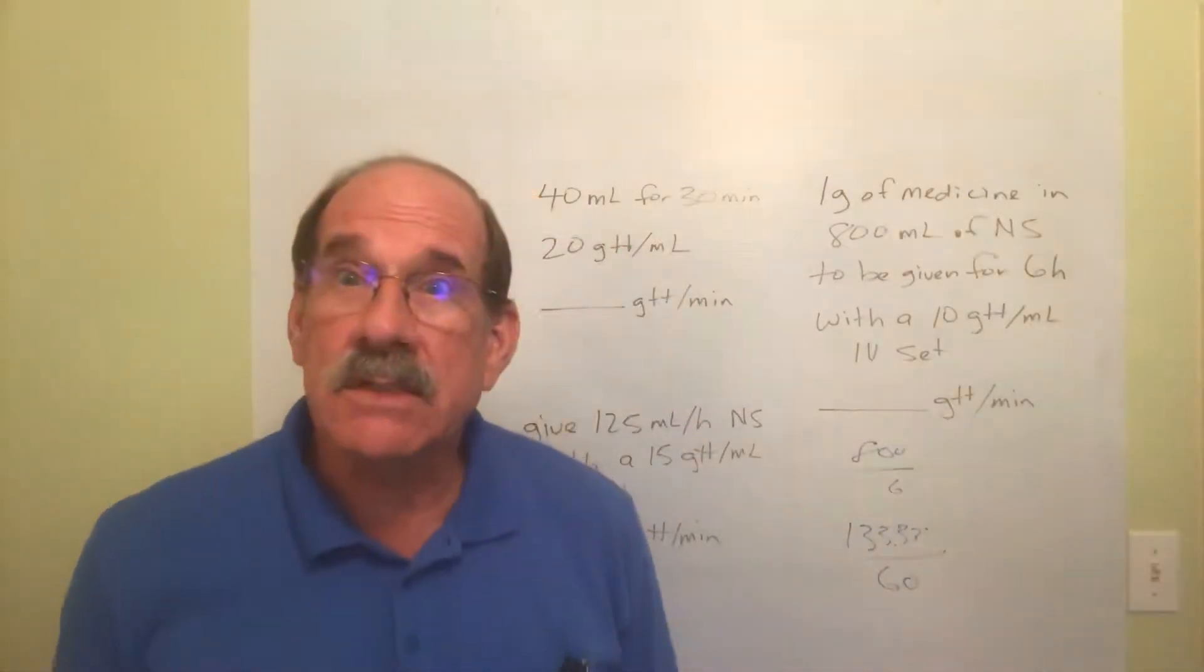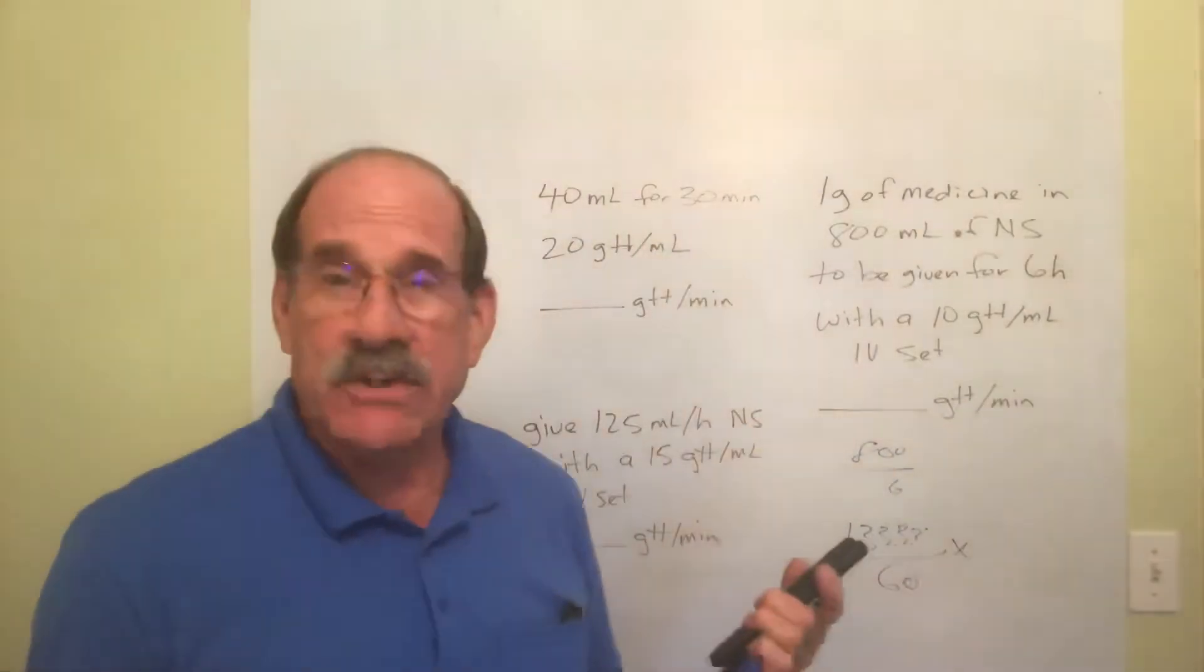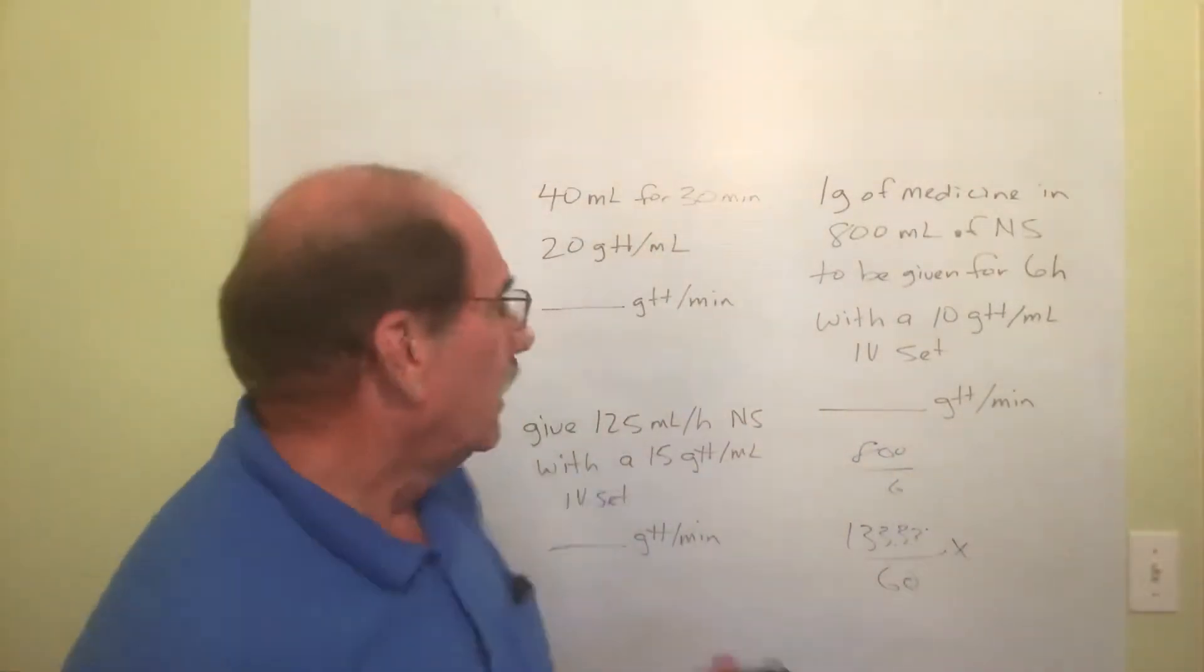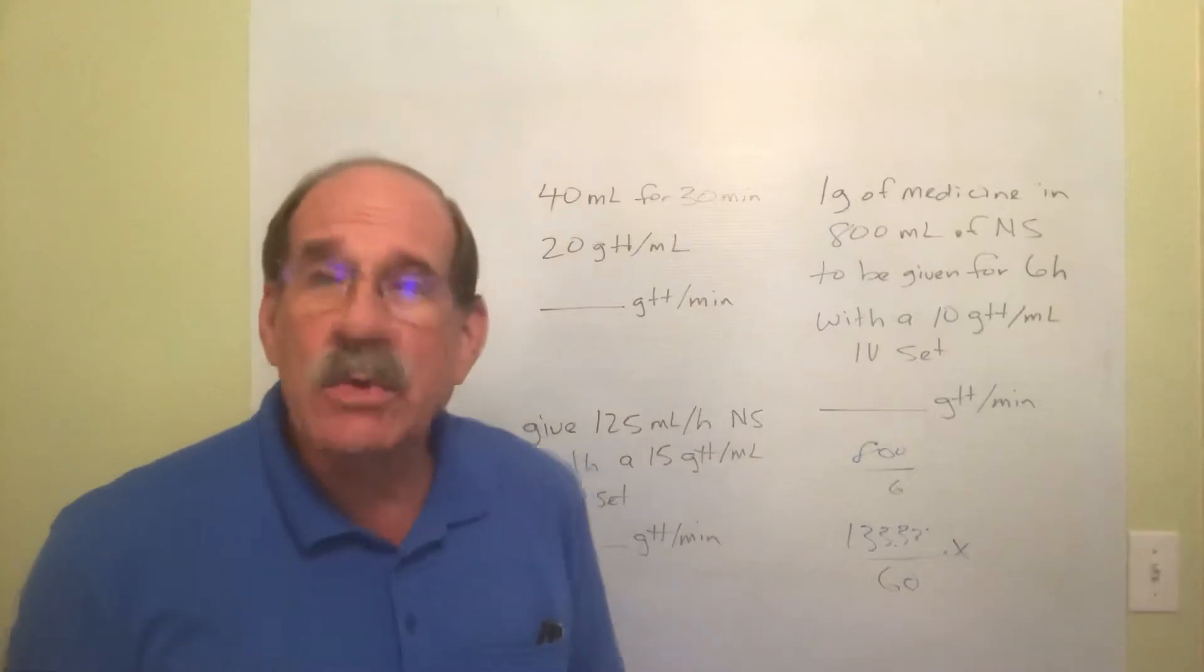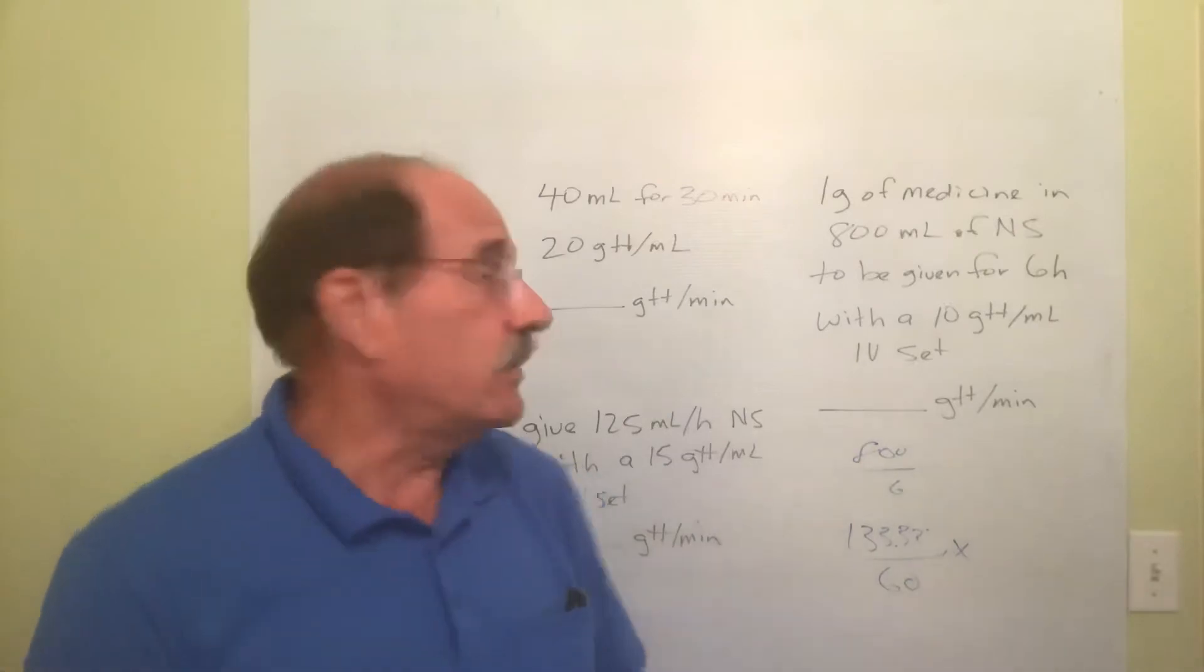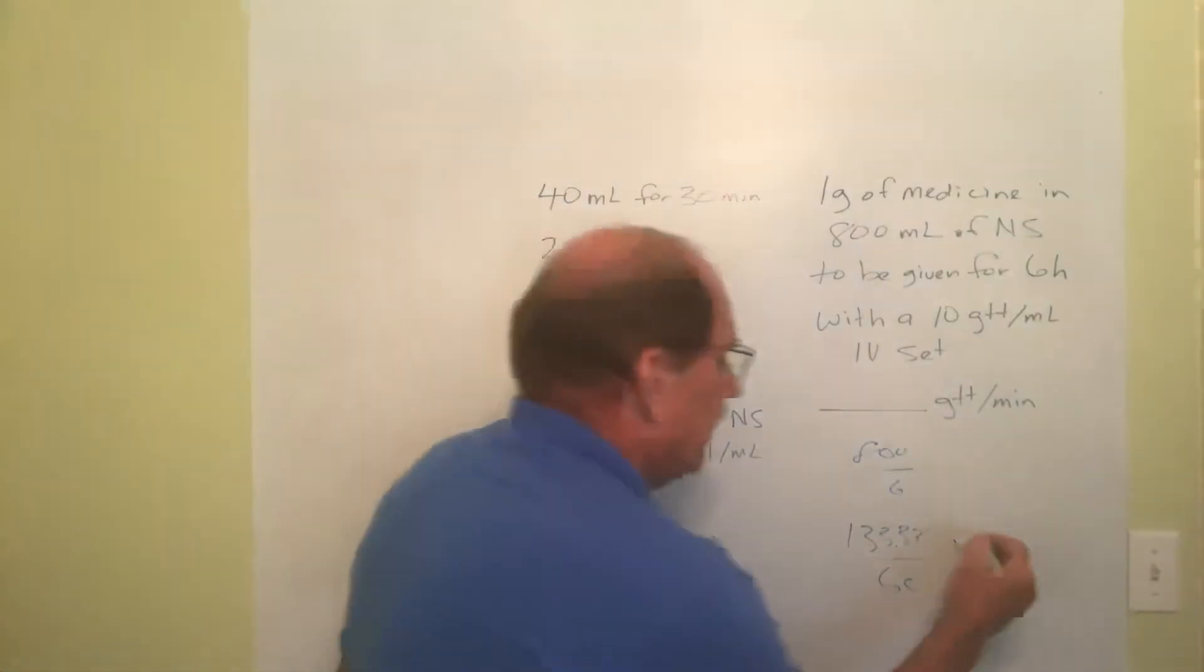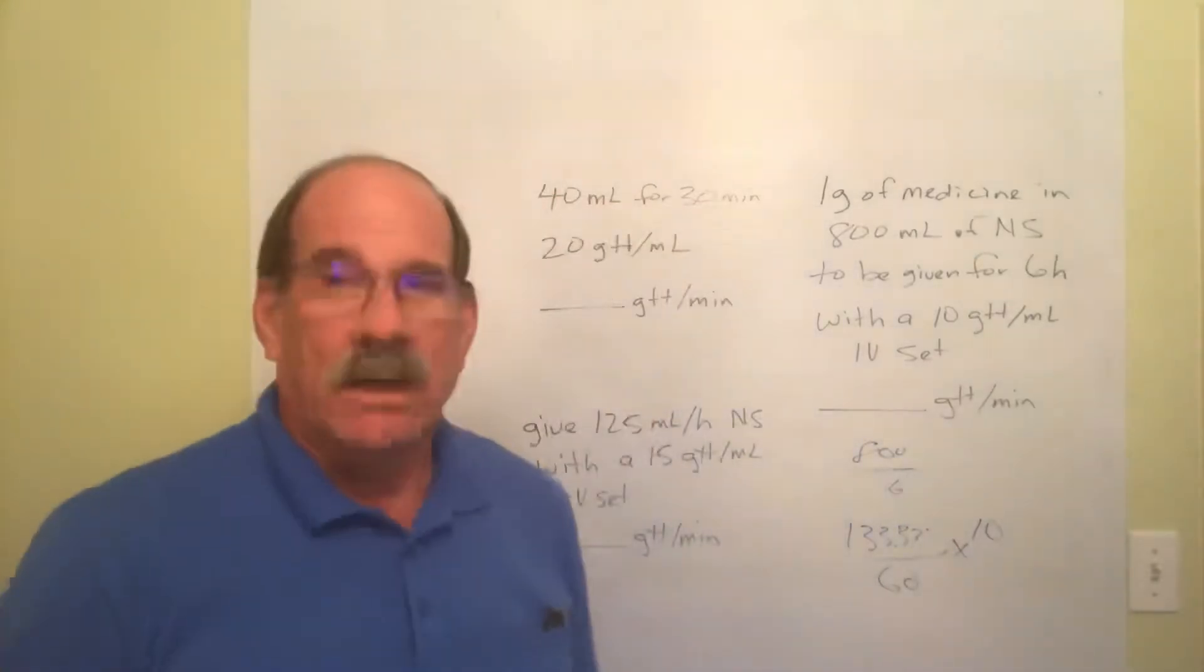Now multiply by the calibration, the drop factor. That's going to be told to you in the homework and on the quiz. In the real world, it's stamped on the label of the IV set - 10 drops per milliliter times 10.